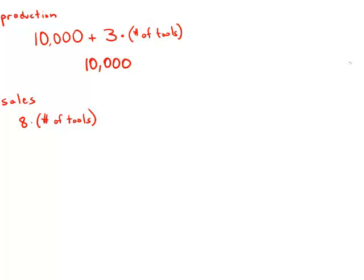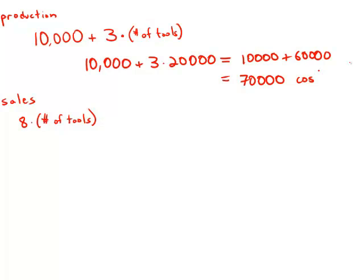What that means is we spend $10,000 plus 3 times 20,000. Well, 3 times 20,000 is 60,000, and 10,000 plus 60,000 is $70,000. That's the total cost of production.